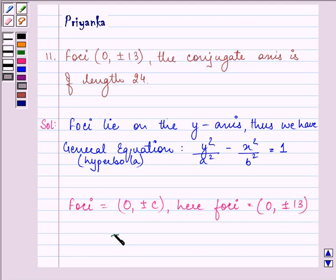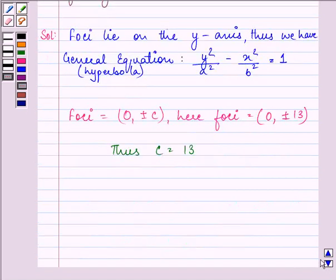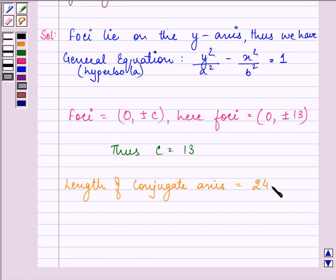Also we are given the length of conjugate axis as 24 and we know that the conjugate axis equals 2b. So we have the value of b as 12.